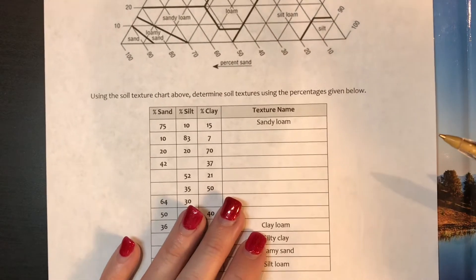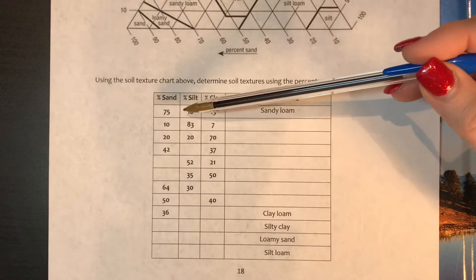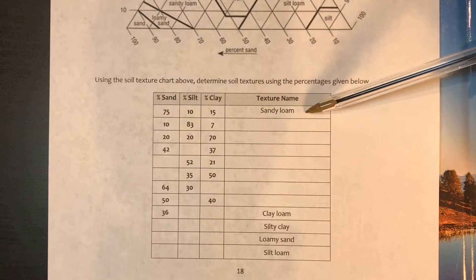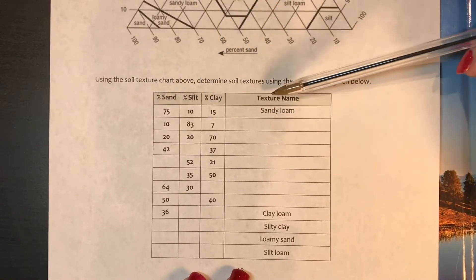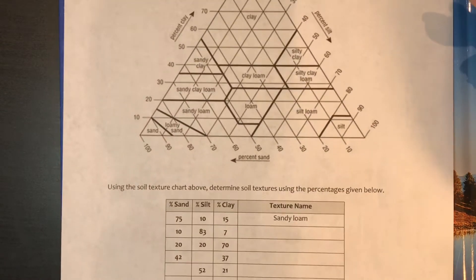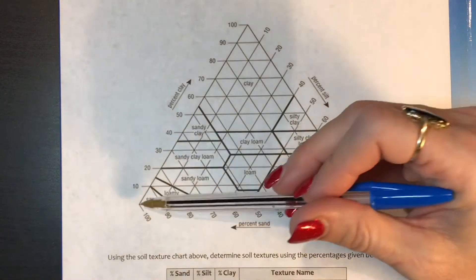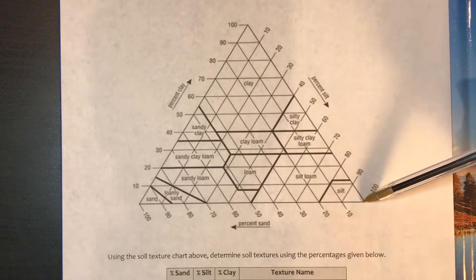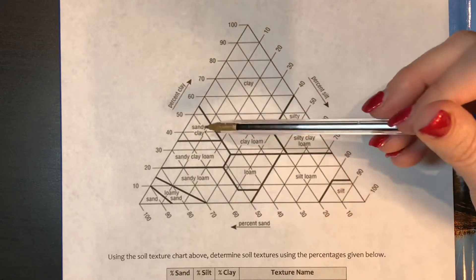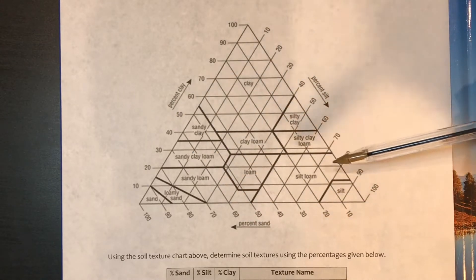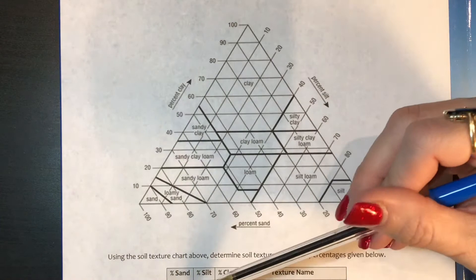You can see that you have a table here to fill out. Let's just start with the beginning. With the first one I have an example. You can see you have 75% sand, 10% silt, and 15% clay is called sandy loam. How do we know this? Let's take a look.